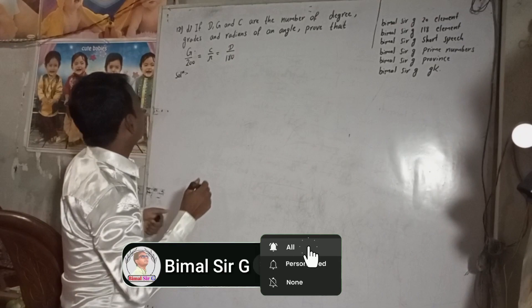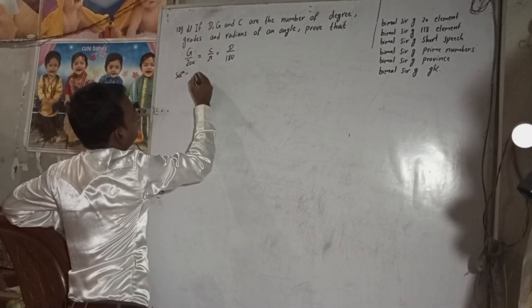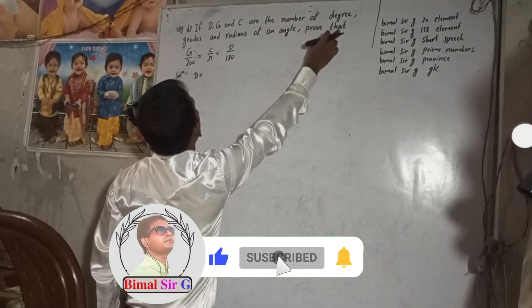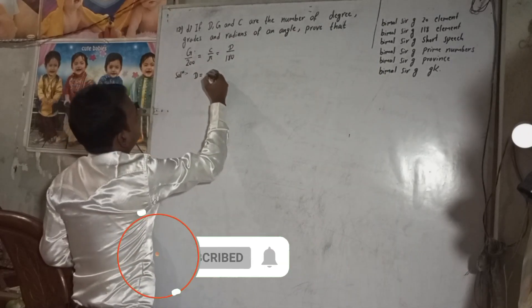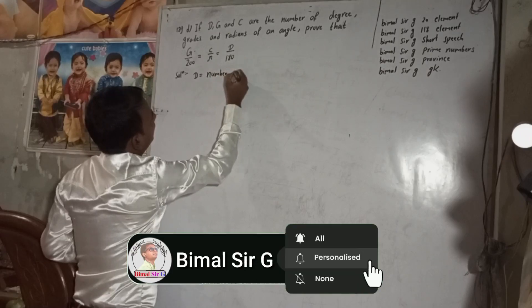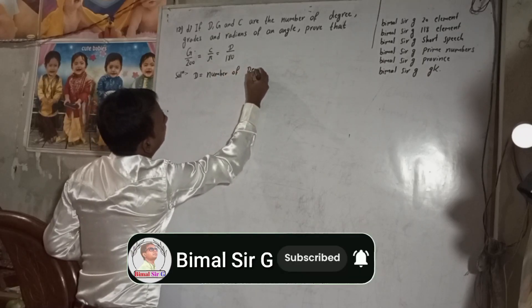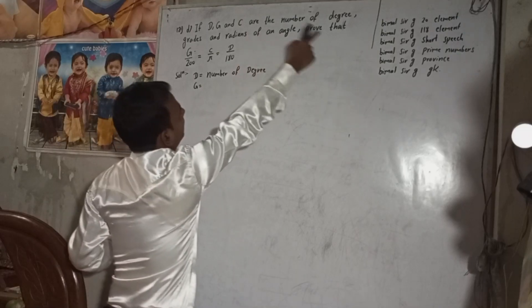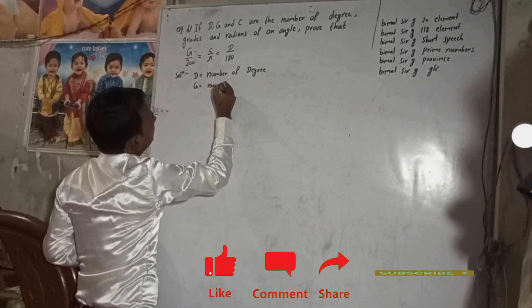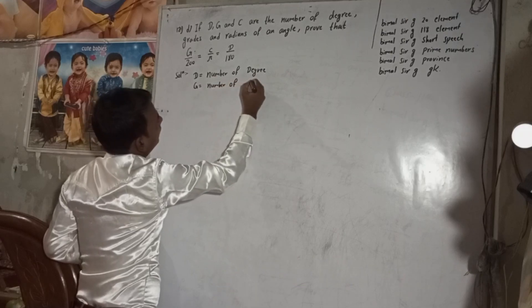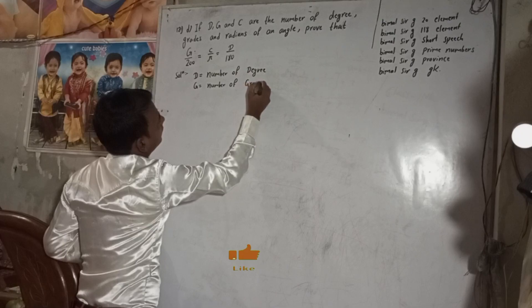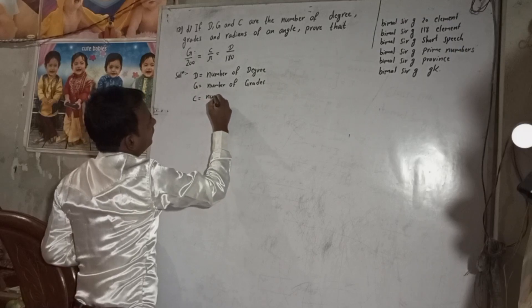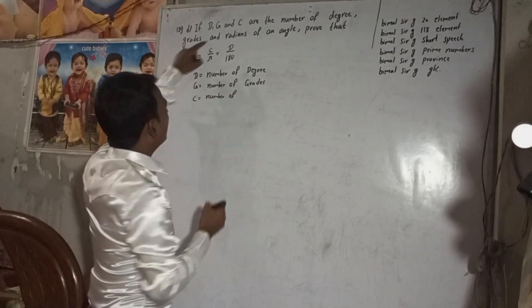For the solution: D is equal to the number of degrees, G is equal to the number of grades, and C is equal to the number of radians.